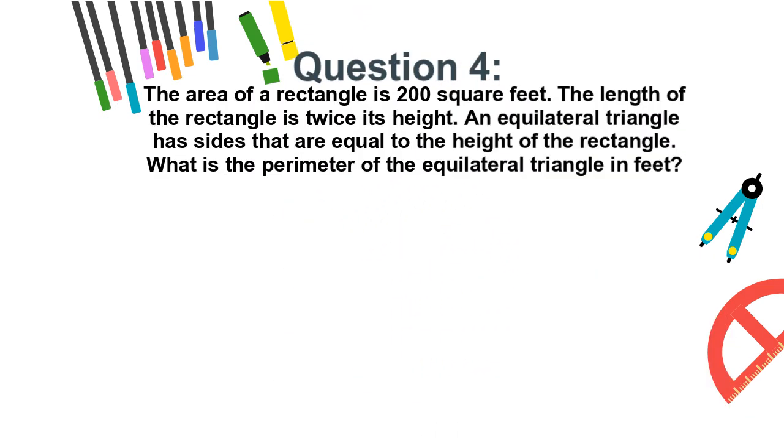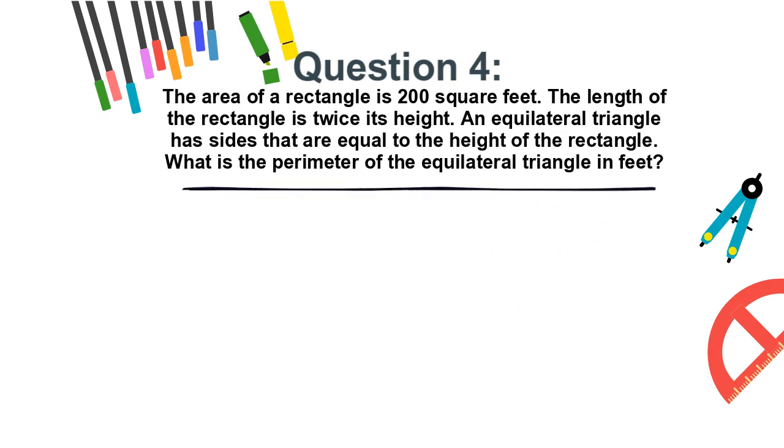Question 4. The area of a rectangle is 200 square feet. The length of the rectangle is twice its height. An equilateral triangle has sides that are equal to the height of the rectangle. What is the perimeter of the equilateral triangle in feet? a. 60. b. 30. c. 50. or d. 100.